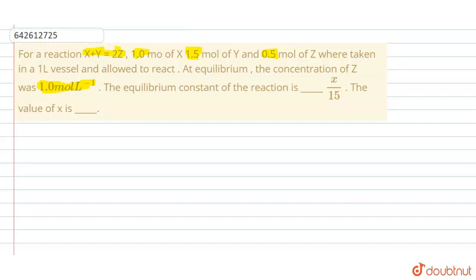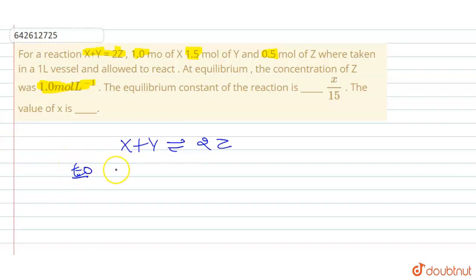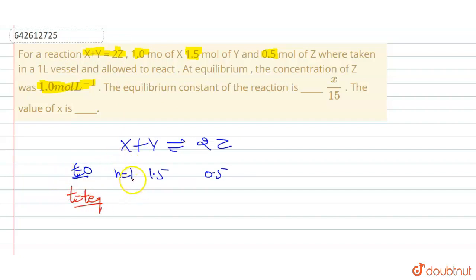We have the reaction x plus y in a reversible way to 2z. Initially at t equals zero, we have one mole of x, 1.5 mole of y, and 0.5 mole of z. They are allowed to react in a one liter vessel, so volume of vessel is one liter.